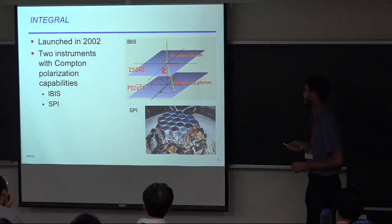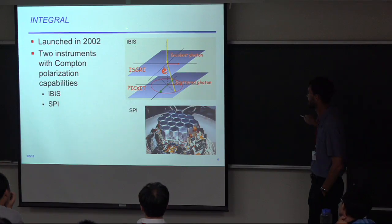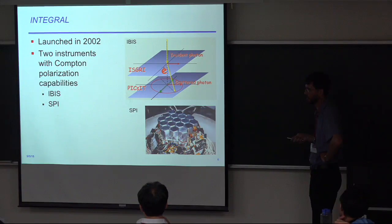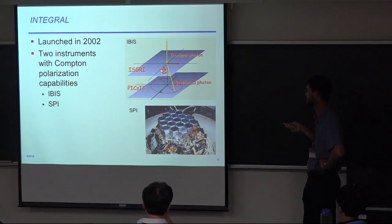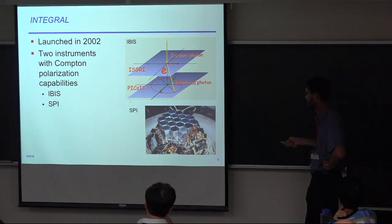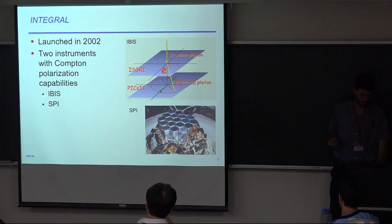INTEGRAL is not optimized as a polarimeter. It has two instruments. The IBIS instrument has two detector planes, so it can measure polarization by getting events that scatter in one plane and are detected in the second — but you have no possibility of getting 90-degree scatterers, so it's not a very sensitive polarimeter. The SPI instrument has 19 germanium detectors that do allow 90-degree scatterers, but there's no position information — just a bunch of light buckets, making it imprecise. So again, not optimized for polarization, but they work for polarization measurements.